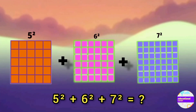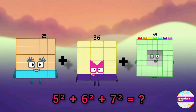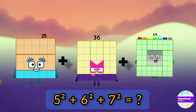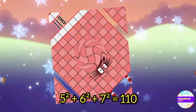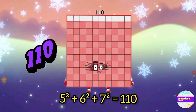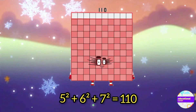Add twenty-five, thirty-six, and forty-nine all together — that is one hundred ten.